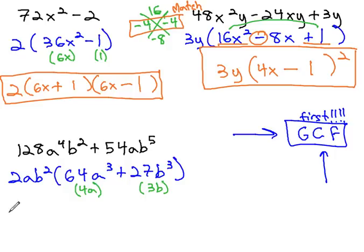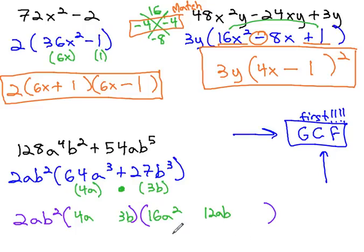We can now factor this, keeping the GCF out front of 2 a b squared to a binomial and trinomial factor. The binomial is made up of those roots we just found, 4 a and 3 b. Then I square the 4 a to get 16 a squared, multiply them together to get 12 a b, and finally square the 3 b to get 9 b squared.